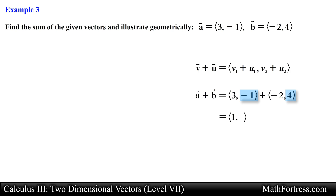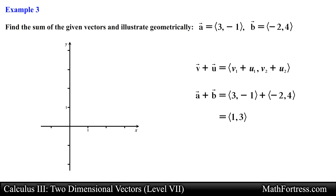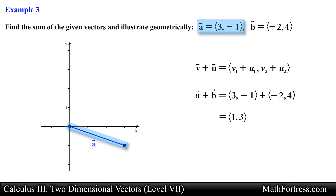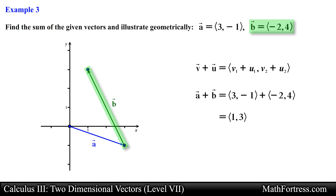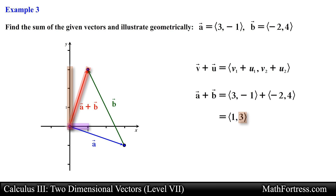We take the x components of vector A and vector B and add them together, and then we do the same for the y components. In the end we obtain the resulting vector in component form with an x component of 1 and a y component of 3. Now let's use the triangle law to show that the sum of vector A and vector B forms a vector with an x component of 1 and a y component of 3. We place vector A in standard position, then align the tail of vector B with the head of vector A. Lastly we obtain the resulting vector by drawing a vector from the tail of vector A to the head of vector B. Notice that the resulting vector has an x component equal to 1 and a y component equal to 3, the same answer we obtain by adding the vectors algebraically.